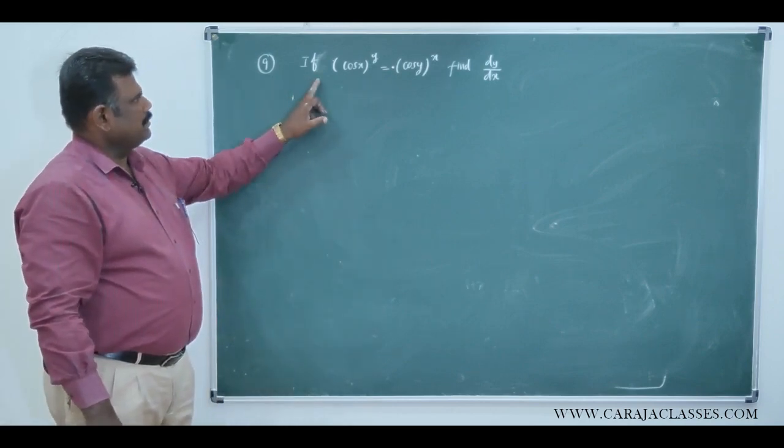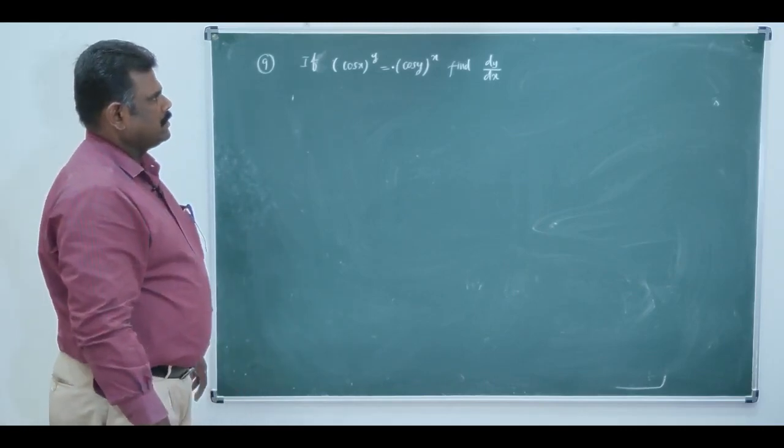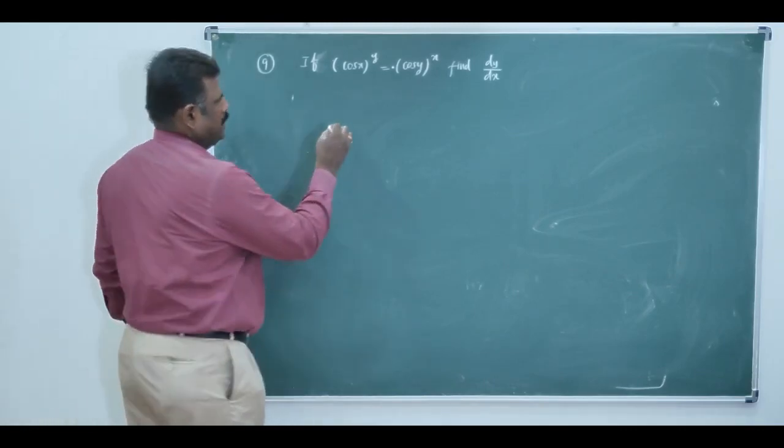Now, we go to the next term. If cos x to the power y equal to cos y to the power x, find the value of dy by dx.